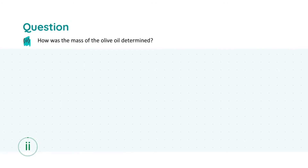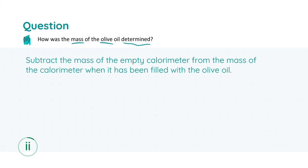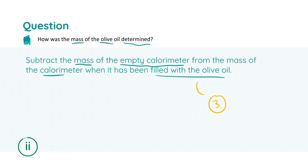Moving to part A(ii): we're asked how the mass of the olive oil was determined. It's actually a simple process. We subtract the mass of the empty calorimeter from the mass of the calorimeter filled with olive oil. So we weigh the calorimeter with olive oil, measure the mass of the empty calorimeter, subtract one from the other, and what we're left with is the mass of the olive oil. This gets you a total of three marks.